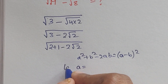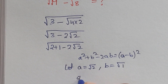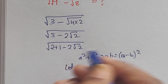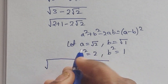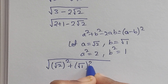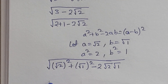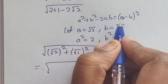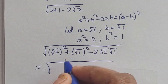Let a equal square root of 2 and b equal square root of 1. Then a squared equals 2 and b squared equals 1. Using this formula, we can write: (square root of 2) squared plus (square root of 1) squared minus 2ab, which is in the form of a squared plus b squared minus 2ab, equal to (a minus b) squared.